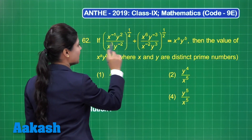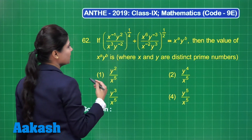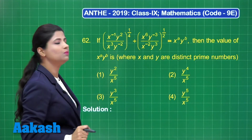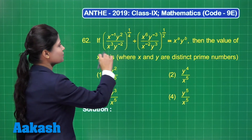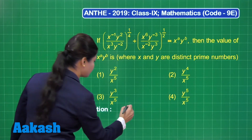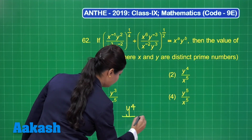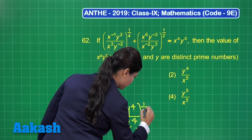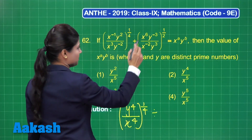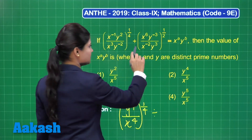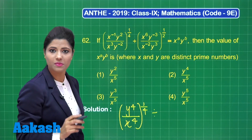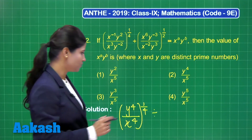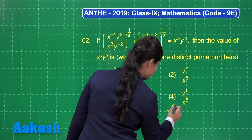Here I have y raised to the power minus 2 in the denominator. Bringing it to the numerator gives y squared times y squared, which is y raised to the power 4. This reduces to y⁴ upon x⁴, whole raised to the power 1 upon 4, divided by the next expression. In that expression, x raised to the power 6 in the denominator with x raised to the power minus 2, brought to the numerator, becomes x raised to the power 6 plus 2, giving x raised to the power 8.